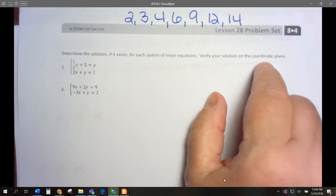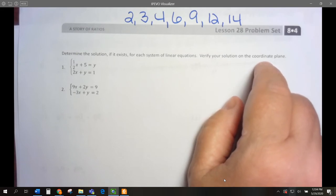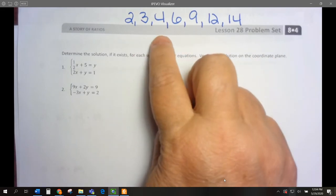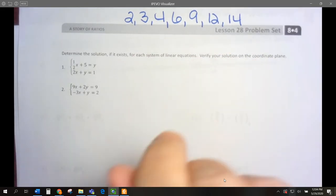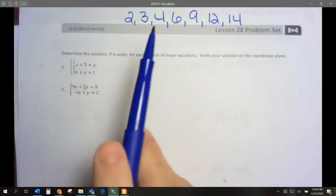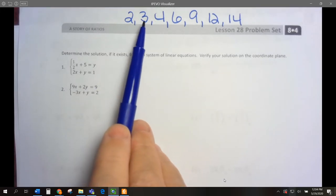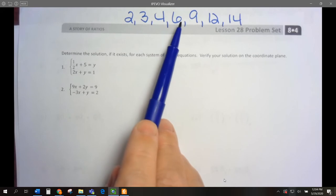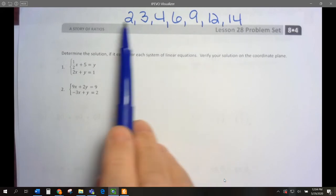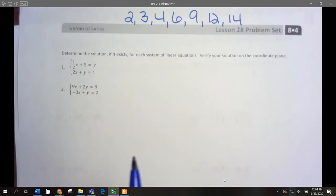It says to verify the solution on the coordinate plane. You can open up your GeoGebra through your Clever app and check them. To save time, we're not doing all 14 problems, just half of them. We're going to do 2, 3, 4, 6, 9, 12, and 14. Some of these we're solving using elimination, others using substitution.